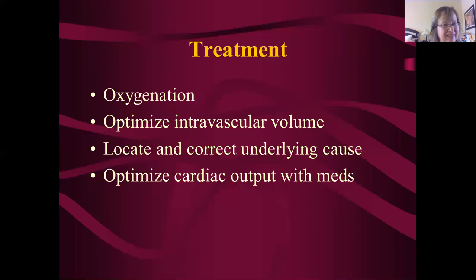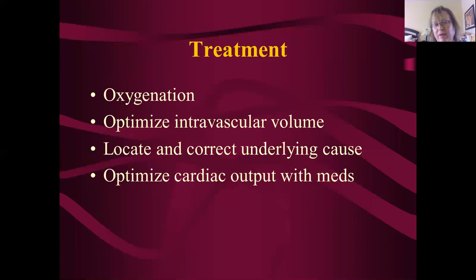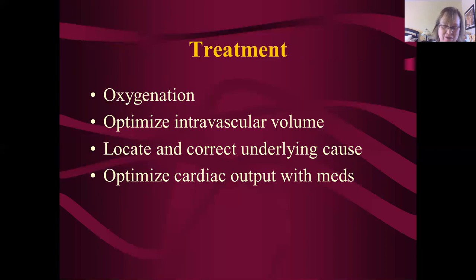When optimizing intravascular volume, we begin with crystalloid infusion. Crystalloids are IV solutions like normal saline, two-thirds and a third, Ringer's lactate, and D5W — colloids are solutions more like blood plasma such as albumin. We start typically with crystalloids as a hydrating solution — normal saline or Ringer's lactate — and we will bolus, meaning infuse fluid as quickly as we can.